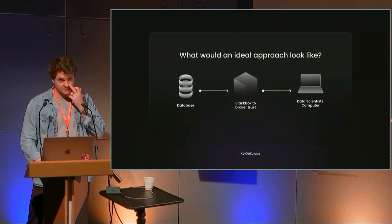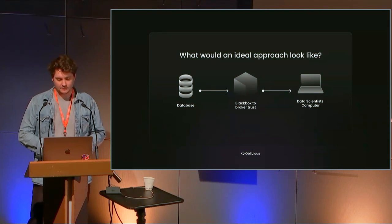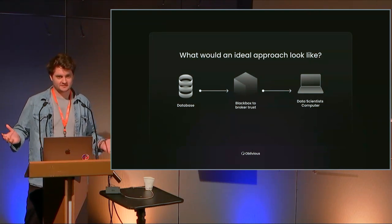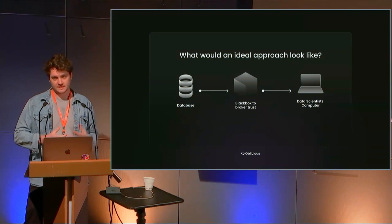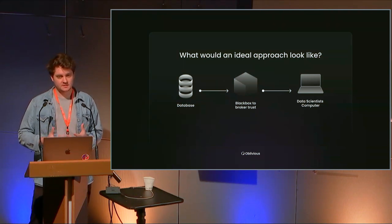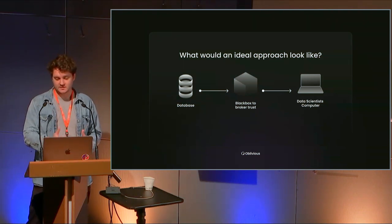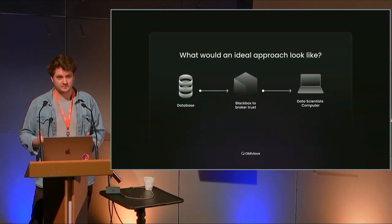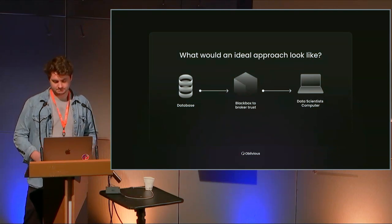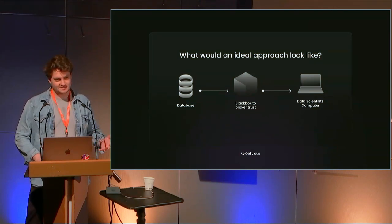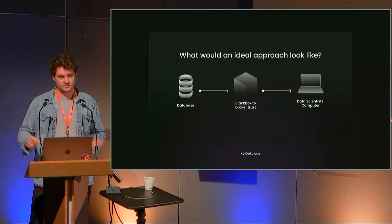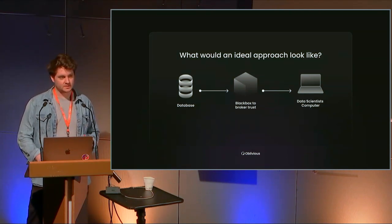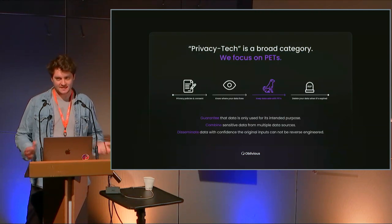What we advocate for is putting essentially a man in the middle. This man in the middle should have some ideal properties that are sometimes hard to achieve, but that we've been working quite hard to get towards. The idea is that data could be pulled down into a black box that's opaque at runtime — so people can't see the data as it's being processed — and which can guarantee that the insights extracted by a data scientist can't be used to reverse engineer the original inputs. The approach we've been taking is by using something called privacy enhancing technologies, or PETs.